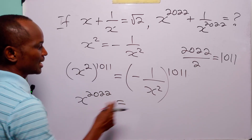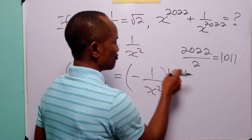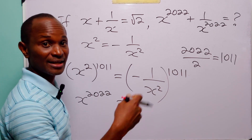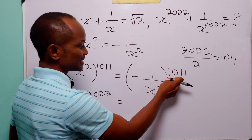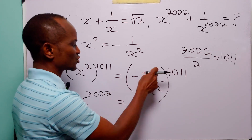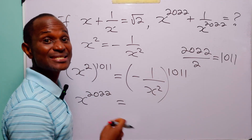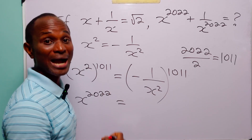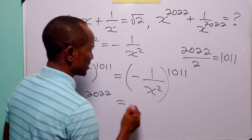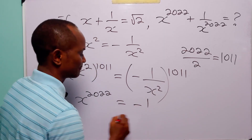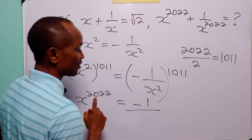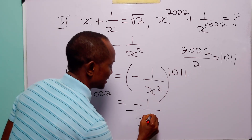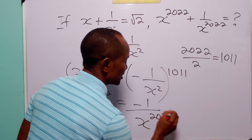This is equal to... minus 1 raised to an odd power. You know the odd numbers: 1, 3, 5, and so on. 1,011 is an odd number, and minus 1 raised to an odd number remains minus 1. But minus 1 raised to an even power becomes 1. So here we have minus 1, and in the denominator we have x to the power 2 times 1,011, which is 2,022.